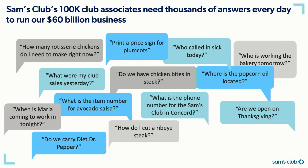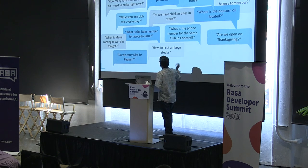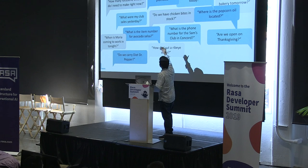Coming to the clubs and people who work at Sam's Club — every day, day to day, they have a lot of questions to run their businesses. For example, questions like: do we have chicken bites in stock? Who is working in the bakery tomorrow? How many rotisserie chicken bites do I need to prepare today? What is the item number for avocado salsa? Can you print a sign for apples? All these kinds of questions the club associate gets daily to run the Sam's Club business.